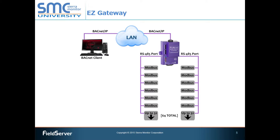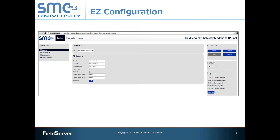Firstly, look to see if there's a field server easy gateway solution for your application. The easy gateway series offers package solutions for common applications and requires little configuration since a large portion of the application is pre-configured. Most site technicians familiar with communications would be perfectly comfortable configuring the easy gateway products themselves and would not need to allocate a large amount of time to do it. At the time of publishing this video, Sierra Monitor Corporation has easy gateway solutions for Modbus to BACnet and for KNX to BACnet. Please note that the software for these gateways is written only for applications where we have BACnet as a client. For example, the Modbus to BACnet easy gateway will represent Modbus devices in a BACnet network, but it is not capable of representing BACnet devices in a Modbus network. You will need the standard field server solution for that.